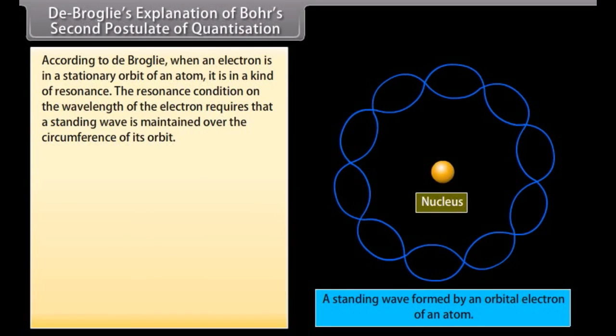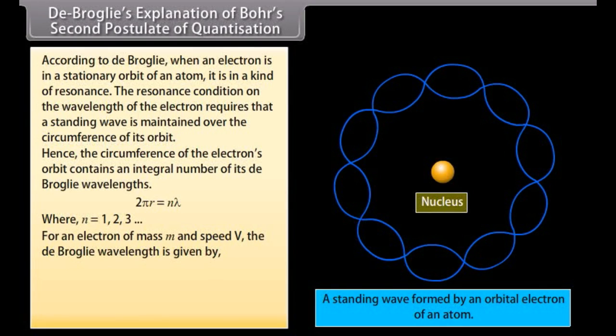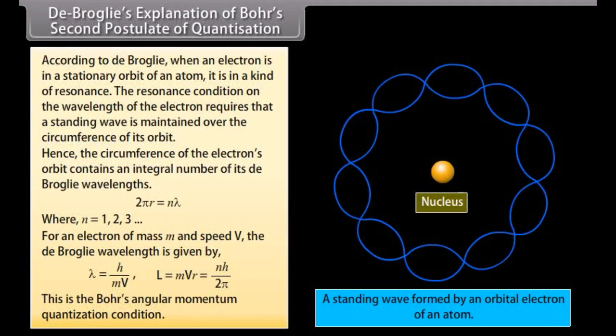De Broglie's explanation of Bohr's second postulate of quantization. De Broglie explained the quantization condition on angular momentum of an orbiting electron. According to De Broglie, when an electron is in a stationary orbit of an atom, it is in the form of a standing wave. 2 pi R equals N lambda where N is equal to 1, 2, 3 and so on. For an electron of mass M and speed V, the De Broglie wavelength is given by H upon MV. This may be written as MVR equals NH upon 2 pi. This is the Bohr angular momentum quantization condition.